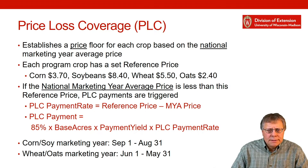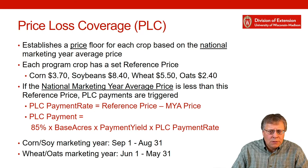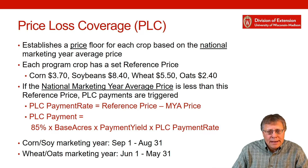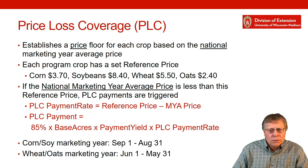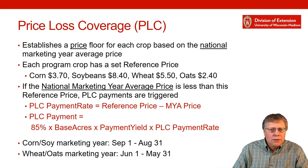Price Loss Coverage is very much similar to the old counter-cyclical payments program. It establishes a price floor for each crop based on the national marketing year average price. Each program crop has a reference price set at the national level: for corn it's $3.70, for soybeans it's $8.40, for wheat it's $5.50, for oats it's $2.40. If the national marketing year average price is less than this reference price, then PLC payments are triggered.